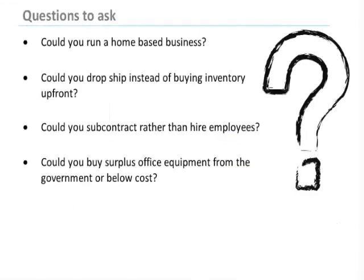Here are some questions to ask to keep costs down. Could you run a home-based business? Instead of buying inventory upfront, could you have manufacturers drop ship? Could you subcontract rather than hire employees? What about buying surplus office equipment and furniture from the government at or below cost?